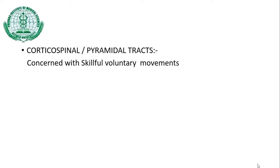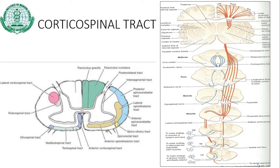The pyramidal tract is concerned with skillful voluntary movements. It occupies the pyramid of the medulla, which is why the corticospinal fibers are also known as the pyramidal tract. This tract includes the corticospinal plus the corticonuclear fibers. The corticospinal fibers arise predominantly from area 4, also from areas 6, 8, and areas 3, 2, 1, as well as some fibers from the temporal and occipital lobes — so they arise from all over the neocortex. They pass through the corona radiata and then the posterior limb of the internal capsule.